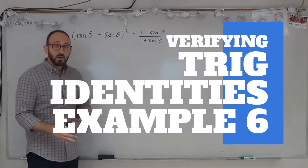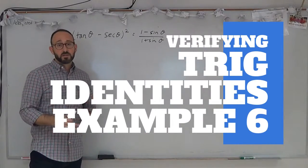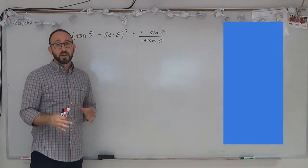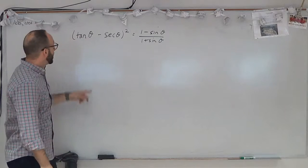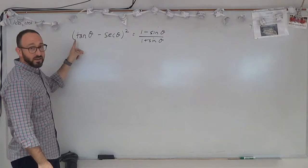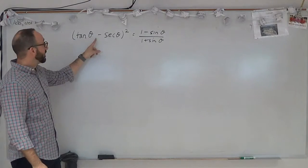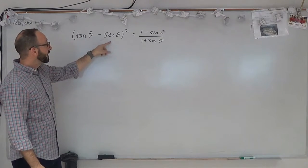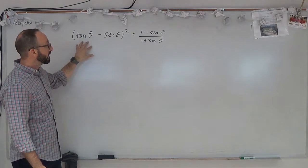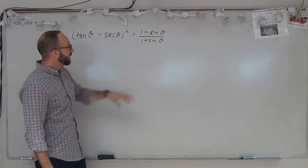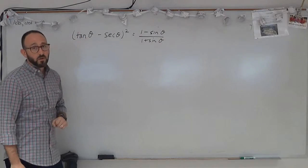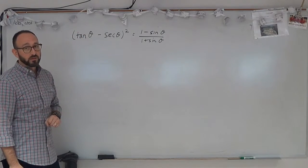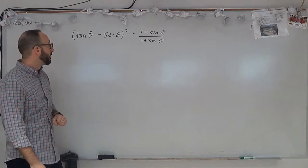This is the last video in our series of verifying trigonometric identities. Here we're going to verify that tan theta minus secant theta, the quantity squared, is equal to 1 minus sine theta over 1 plus sine theta.